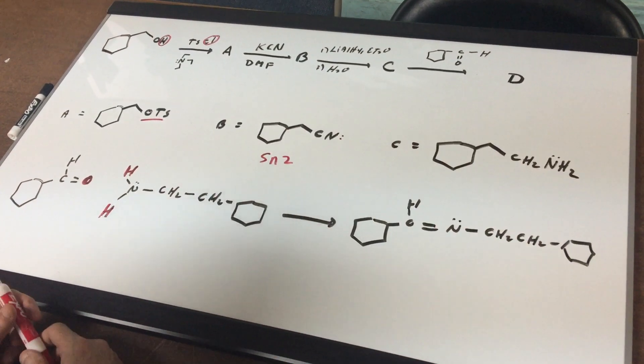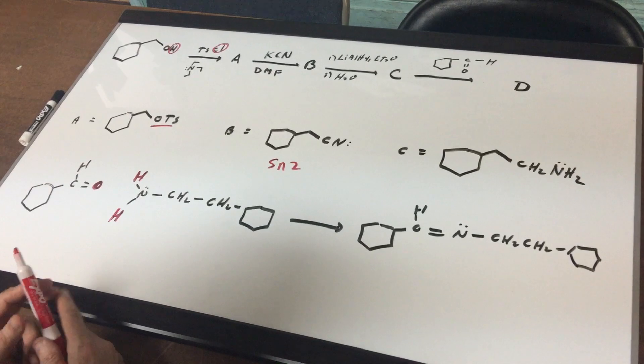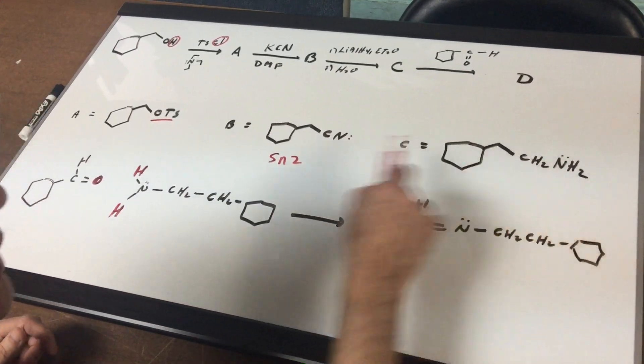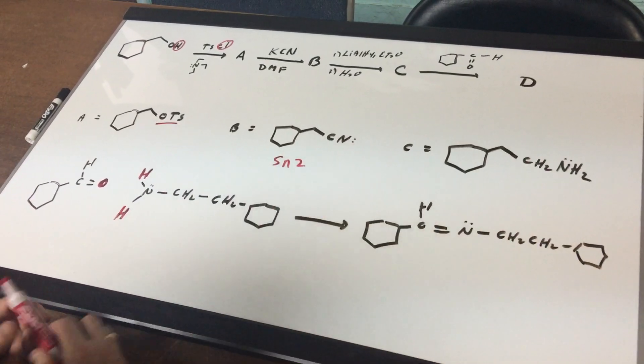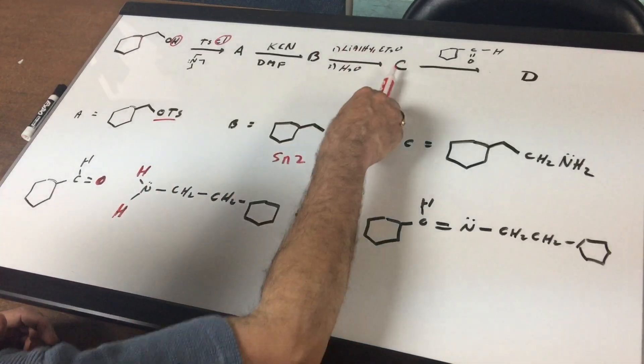B to C represents the reduction of a nitrile. You break the triple bond and you add H's and we now got a CH2-NH2 group. And that's letter C.